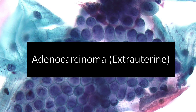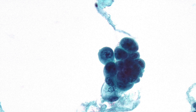Although very uncommon, one must consider extrauterine adenocarcinomas in cervical cytology specimens. This is an example of a high-grade serous carcinoma of the fallopian tube or ovary, showing rounded glandular cells with focal foamy cytoplasm and a mitotic figure. In extrauterine cases there is typically a clean background. These papillary clusters presumably came through the fallopian tube into the uterus and were sampled as part of cervical cytology — a drop metastatic disease pattern.